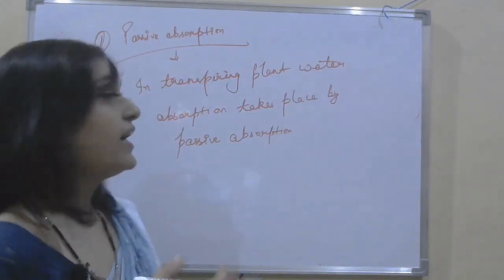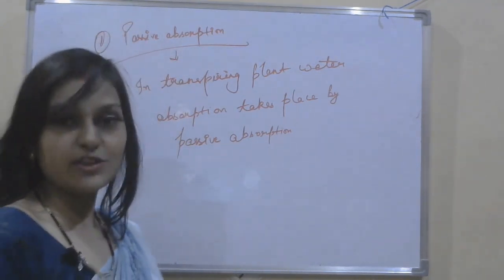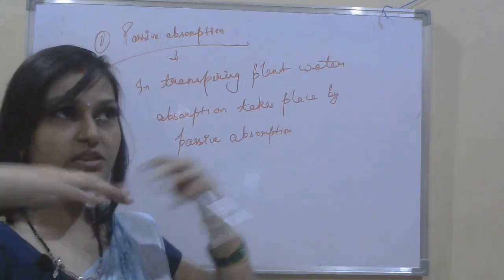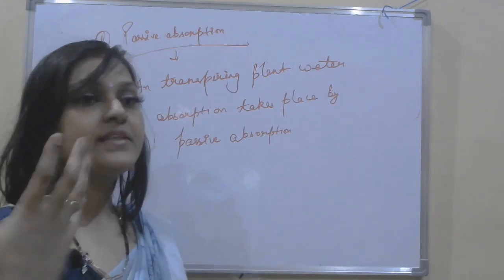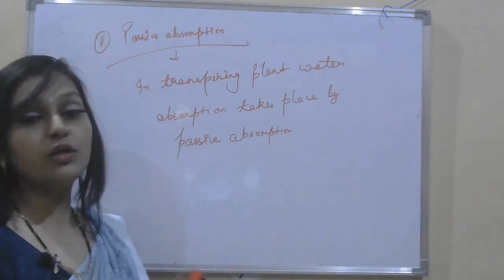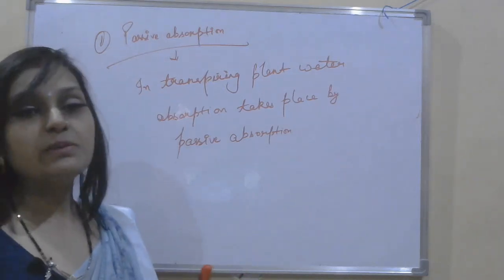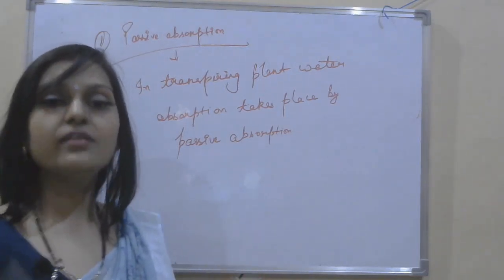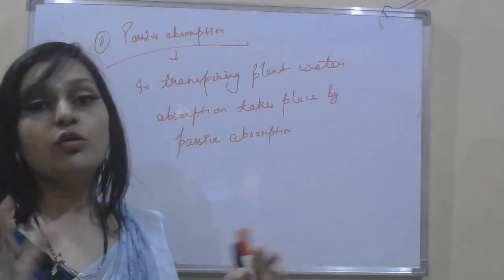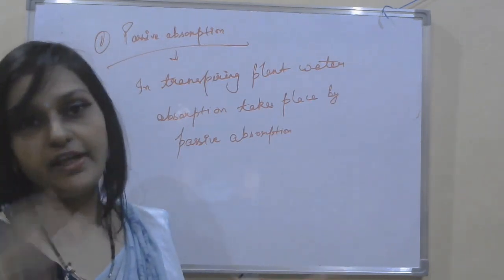In transpiring plants, water absorption takes place by passive absorption. When plants transpire, more water vapors are released. Then new water takes their place. What happens is that a suction is created and water is absorbed from the soil. So it will not be necessary to use any energy or ATP for this process.